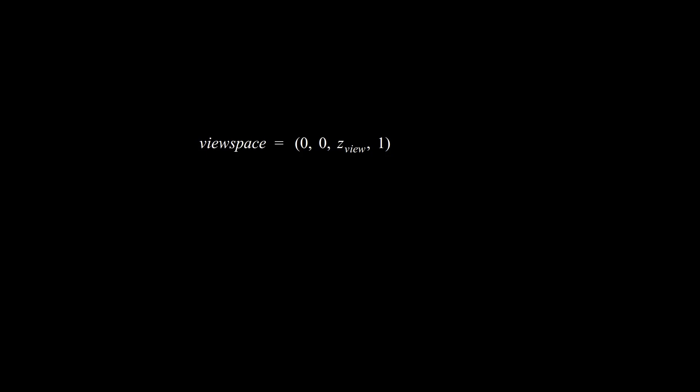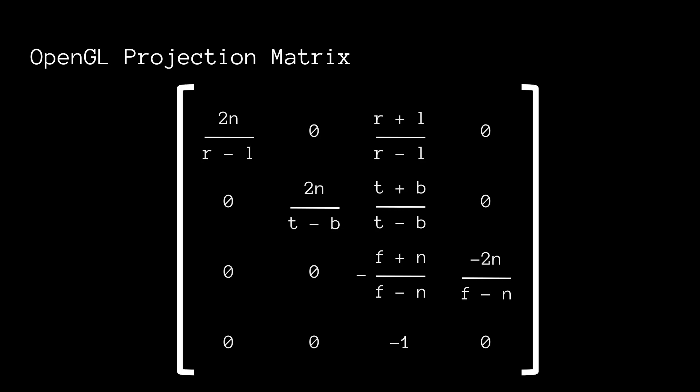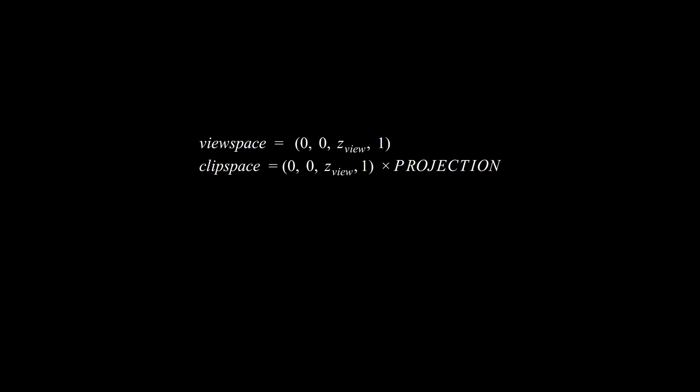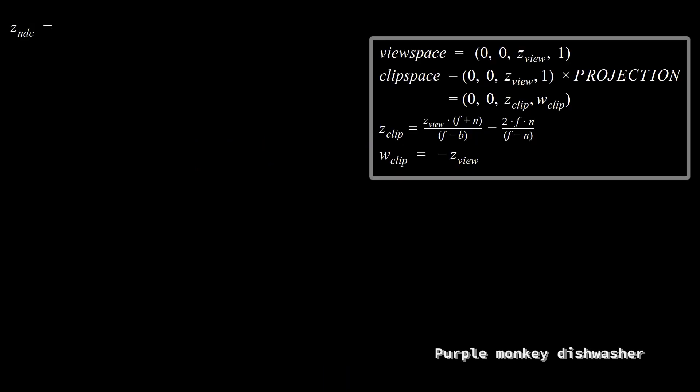Let's say we're transforming a view space point, so 0, 0, Z with W equals 1, since we only care about recovering view space depth. We're going to multiply that by the projection matrix, and, as a reminder, this is what the OpenGL projection matrix looks like. So, 0, 0, and we'll call this ZView and 1, transformed by the projection matrix, will give us 0, 0, and we'll call this ZClip and WClip, where ZClip is equal to, well, I'm not going to read this out. You can just look on the screen.